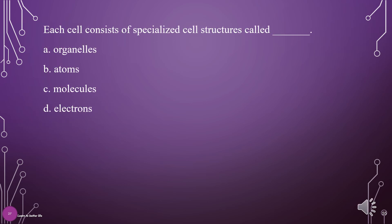Each cell consists of specialized cell structures called what? A. Organelles, B. Atoms, C. Molecules, D. Electrons. They are called A: Organelles.